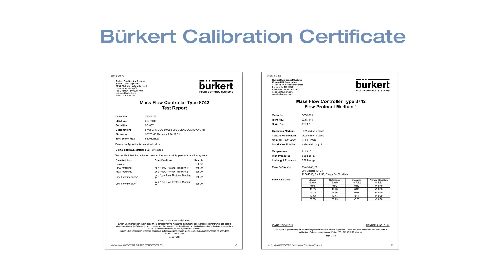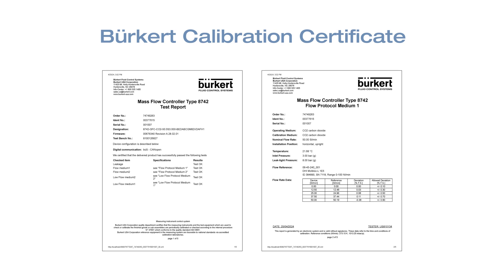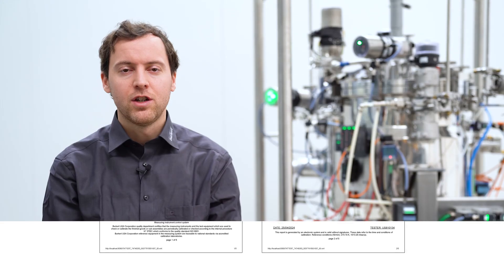An adjustment is always followed by a flow calibration with the result of a calibration certificate. A big advantage of Burkert mass flow controllers is that our sensors do not drift. That means that a later flow adjustment is hardly ever necessary.